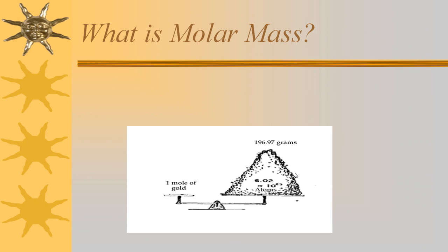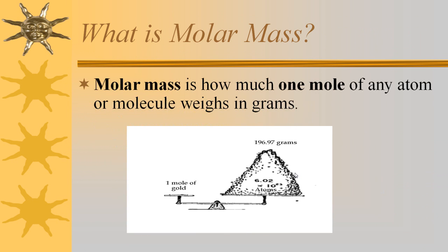All right, so in chemistry, we deal a lot with what's known as molar mass. So molar mass is how much one mole of any atom weighs in grams. So basically, gold. If I had one mole of gold, it would weigh 196.97 grams. 196.97 is the molar mass of gold.